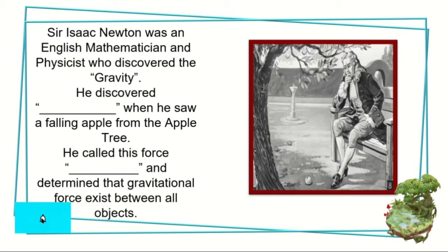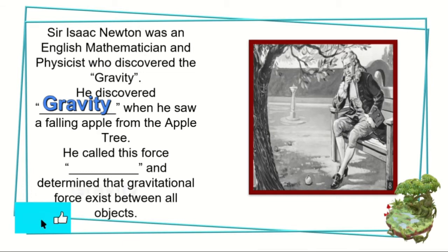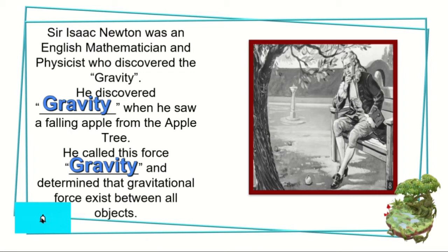The man behind this discovery is Sir Isaac Newton. He was an English mathematician and physicist who discovered gravity. He discovered gravity when he saw a falling apple from the apple tree. He called this force gravity and determined that gravitational force exists between all objects. Thanks to Sir Isaac Newton, we now know that the reason behind the falling of an apple from its tree is gravity.